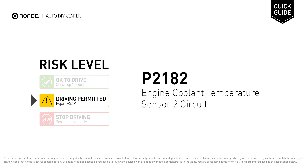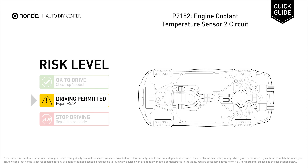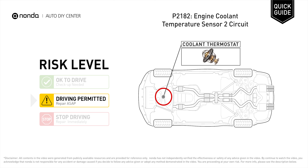P2182 is a diagnostic trouble code for engine coolant temperature sensor 2 circuit. Under this circumstance, short distance driving is permitted, but your vehicle should be repaired ASAP. P2182 is a code for the ECM detecting that ECT sensor number 2 does not correlate with ECT sensor number 1 at cold engine start up.